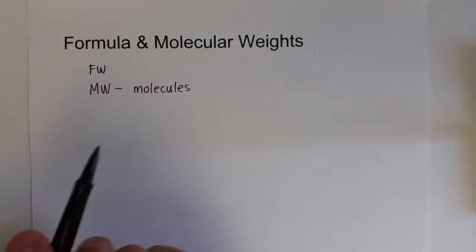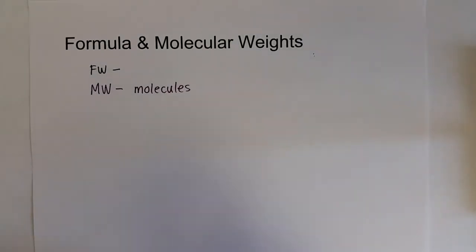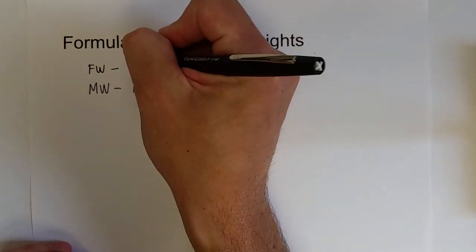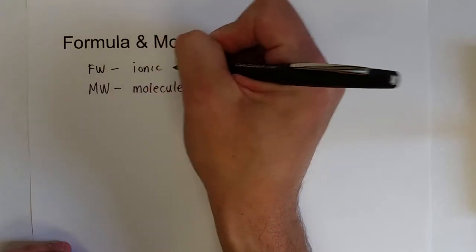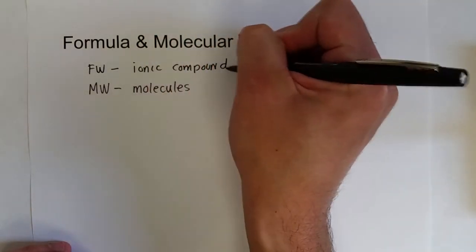The formula weight, or formula mass, is for ionic compounds like sodium chloride.